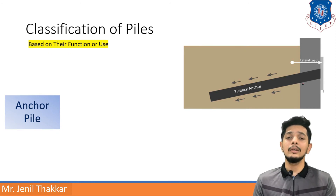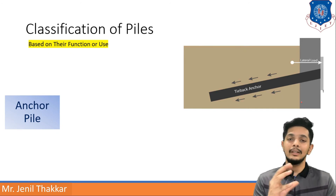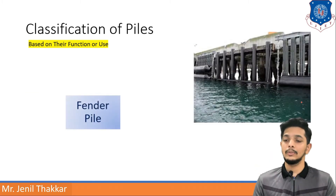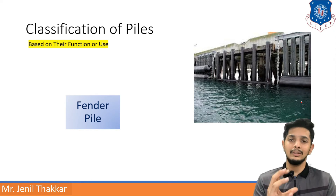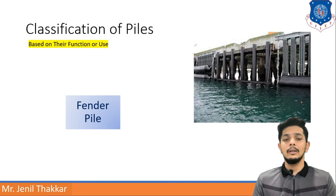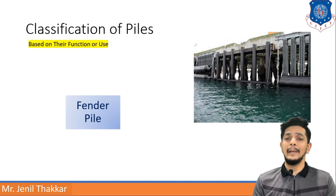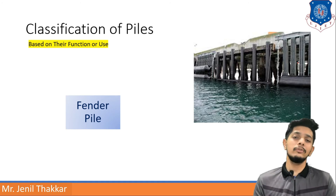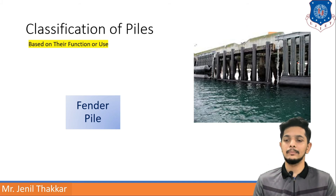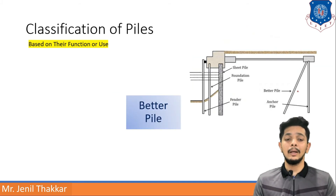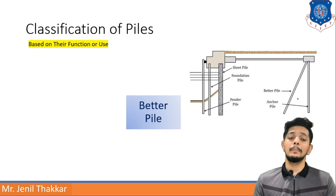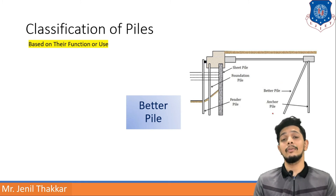Fender piles are generally used on riversides, oceans, or seashores. You can see that platforms or bridges of small or large caliber are constructed on these fender piles. A batter pile is an inclined pile — you can see the inclined one in the image. It is generally used as a supporting structure alongside an anchor pile.